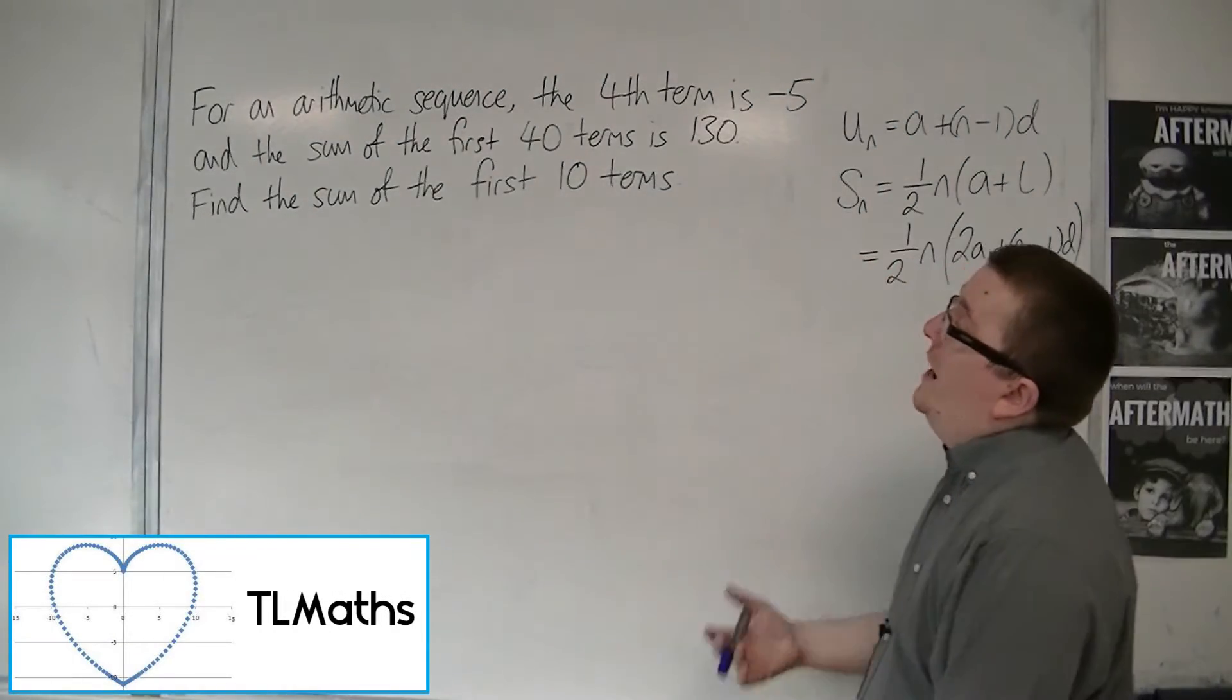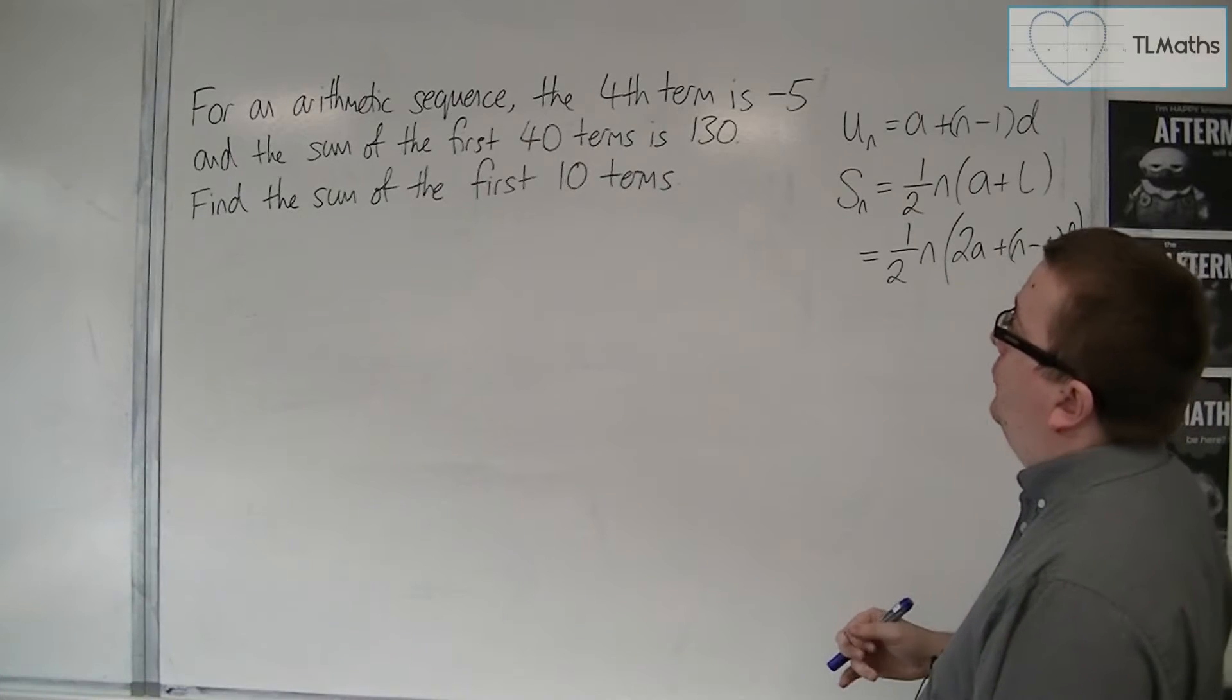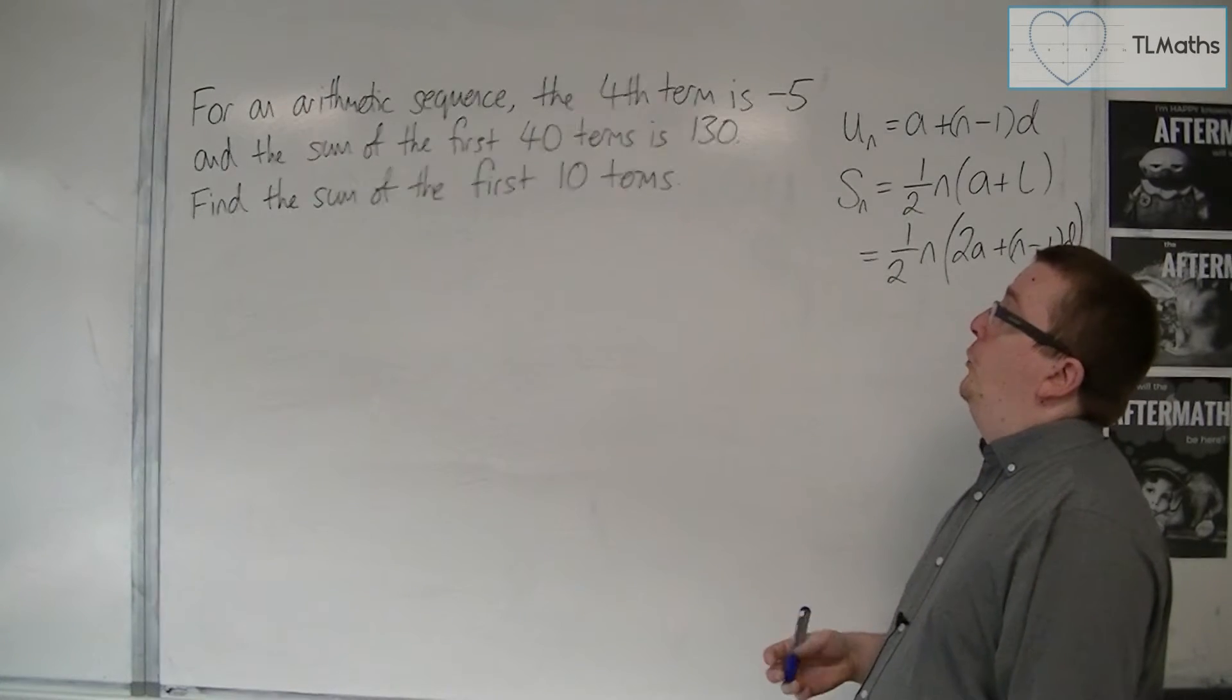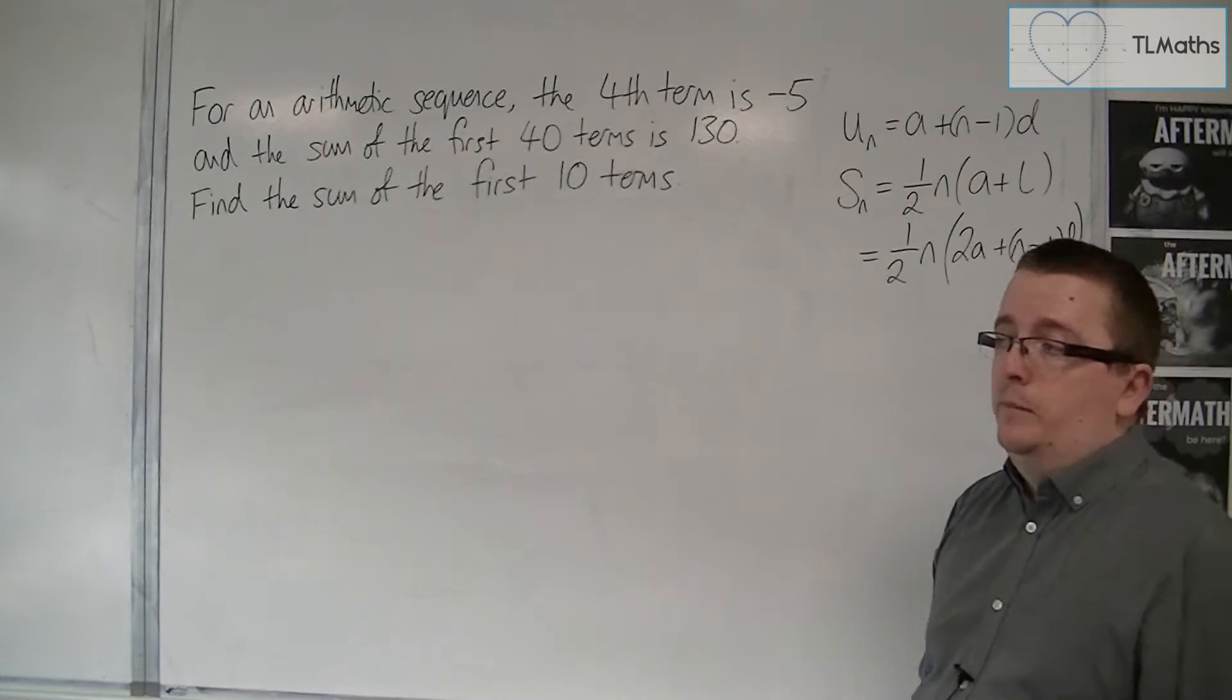So in this problem, we have an arithmetic sequence. The fourth term is minus 5, and the sum of the first 40 terms is 130. And we're asked to find the sum of the first 10 terms.